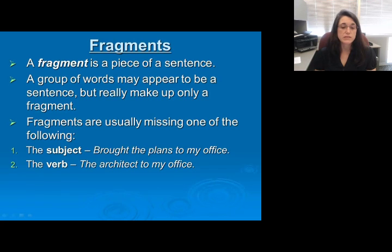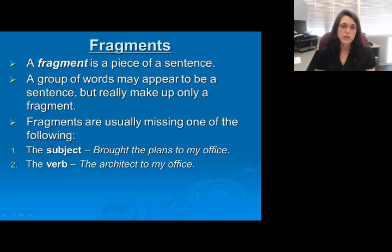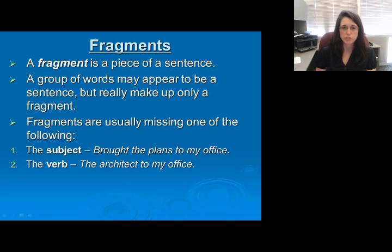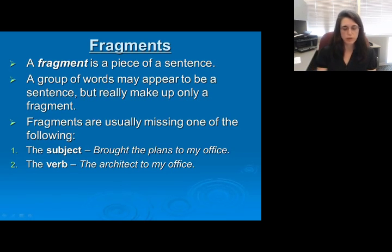The second common mistake is the missing verb. The example here is 'the architect to my office.' This is not always the most common type of fragment — typically the missing subject is more common, because we make a lot of assumptions about who or what the subject is doing. But the verb is often left out as well, and in this particular sentence we don't have whatever action the architect is doing.